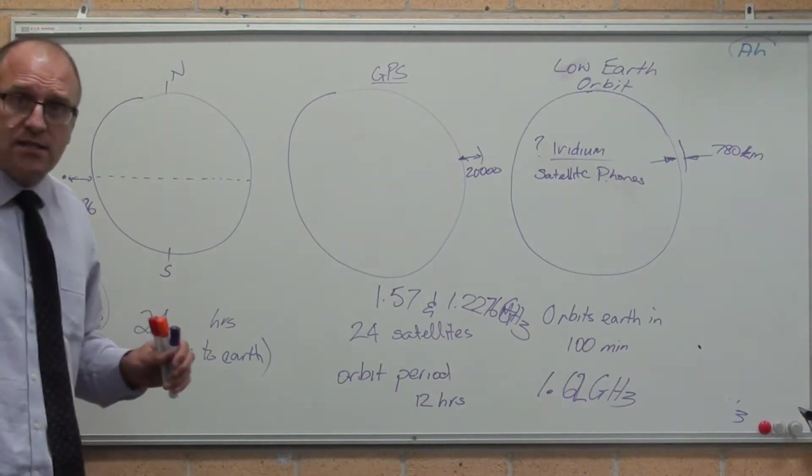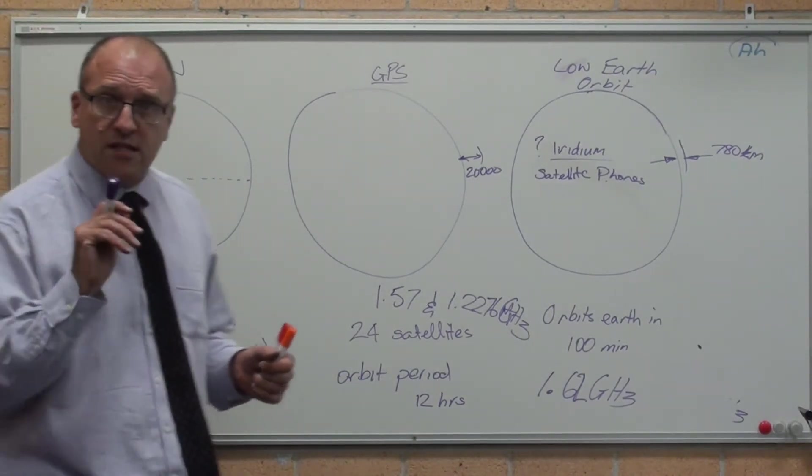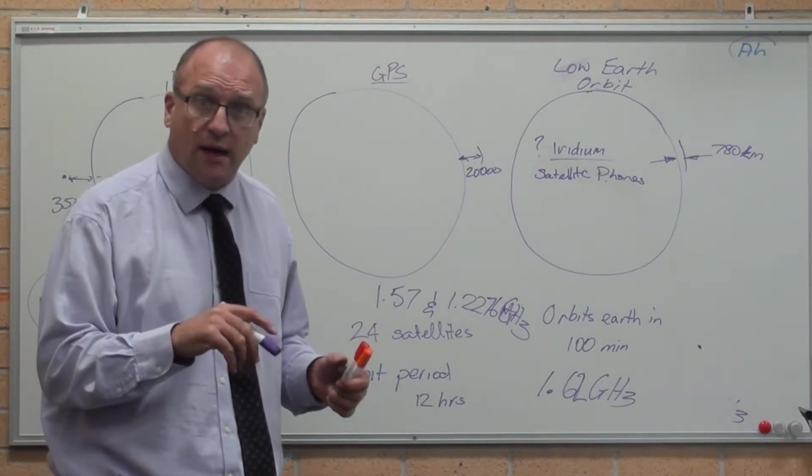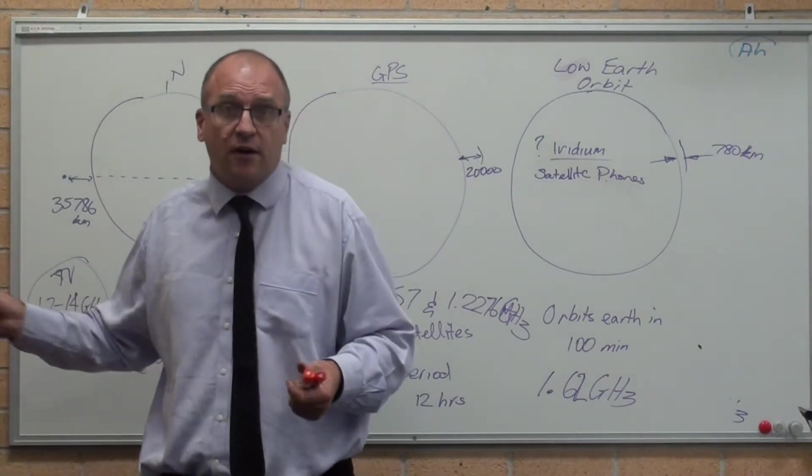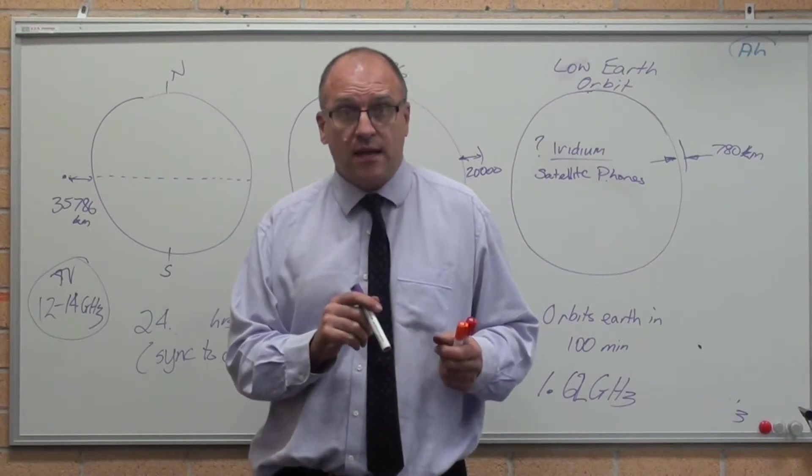Geostationary satellites are satellites that stay in a fixed point above the Earth. There is only one spot in the Earth you can do this, and that's being above the equator. Geostationary satellites are exactly 35,786 kilometres straight up, assuming you're standing on the beach.